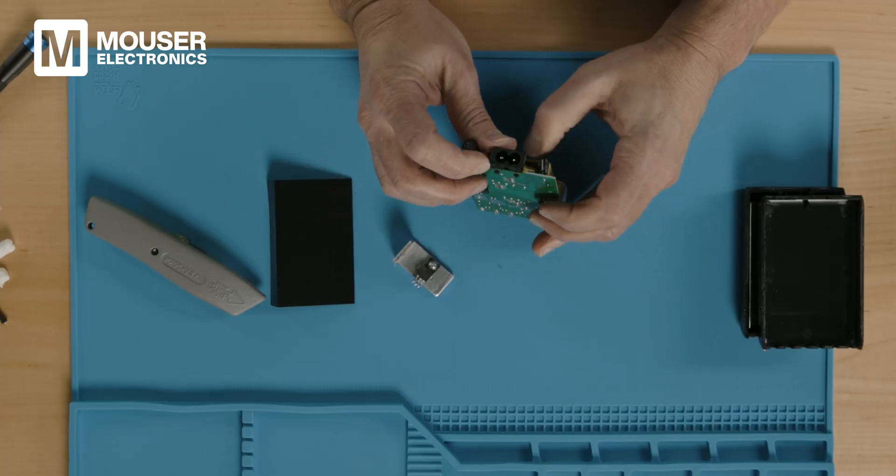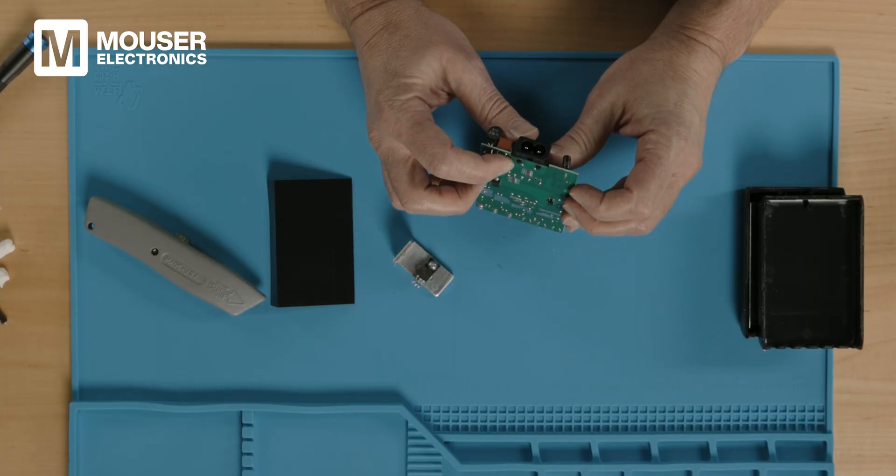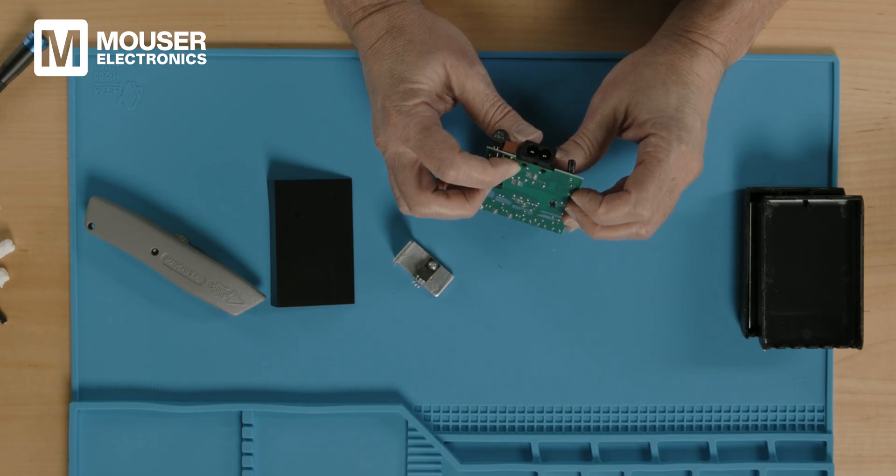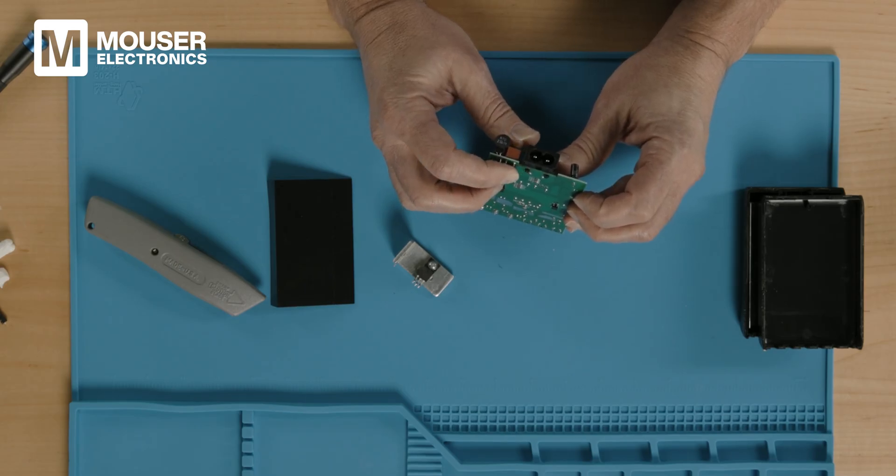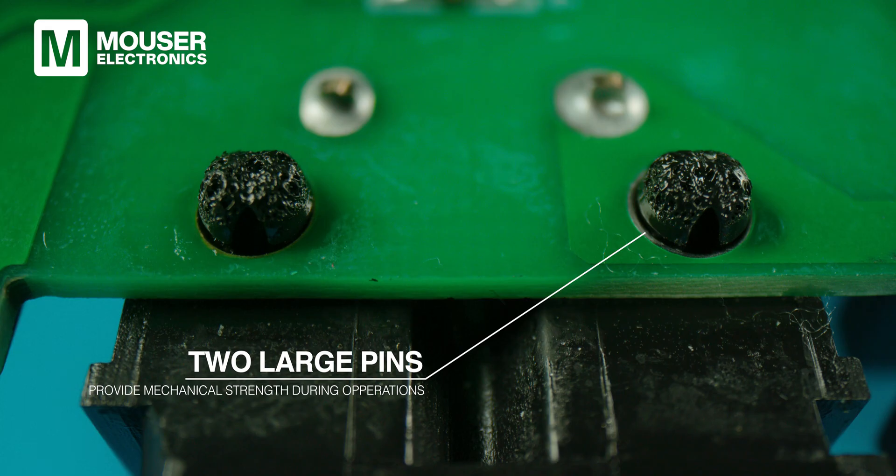Looking at the power plug mount here, in addition to the solder connections for the electrical connections of AC power, the power plug socket also has two large pins that provide mechanical strength during plugging and unplugging operations. So this might provide a little bit more stability than some of the other devices we looked at.